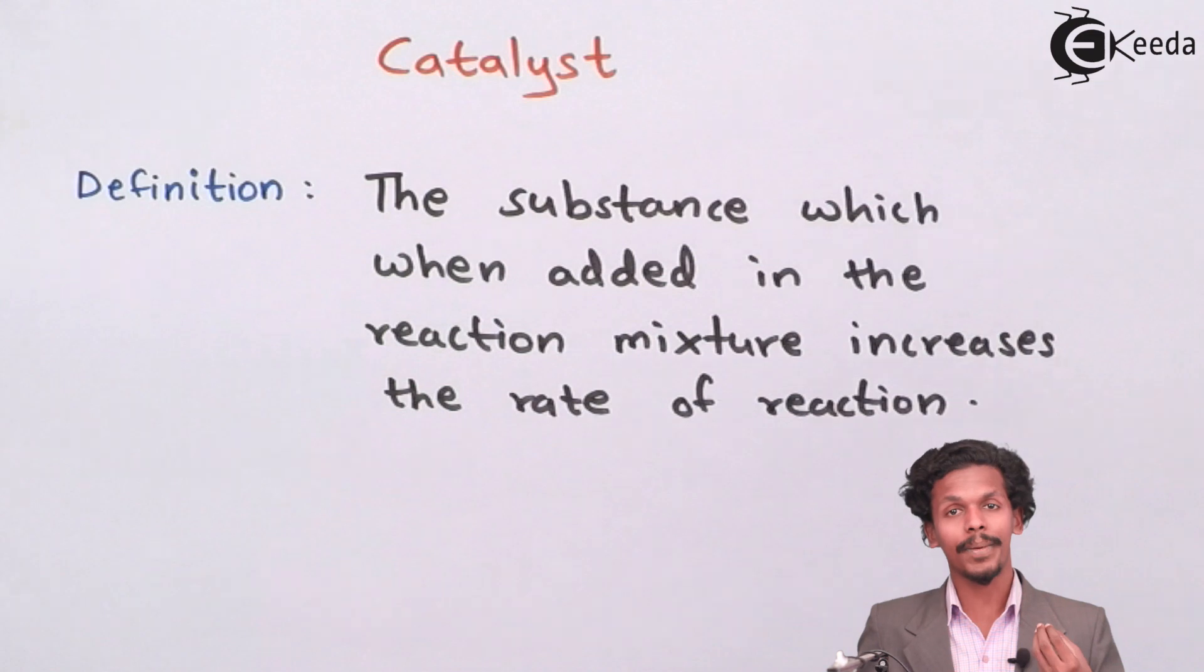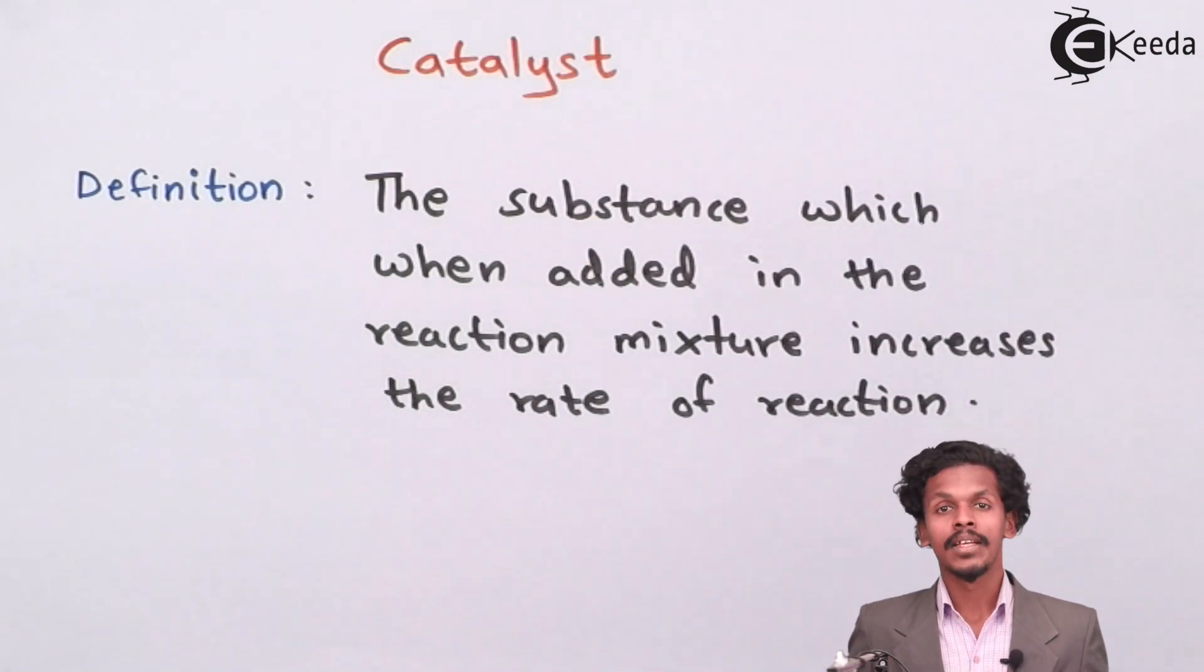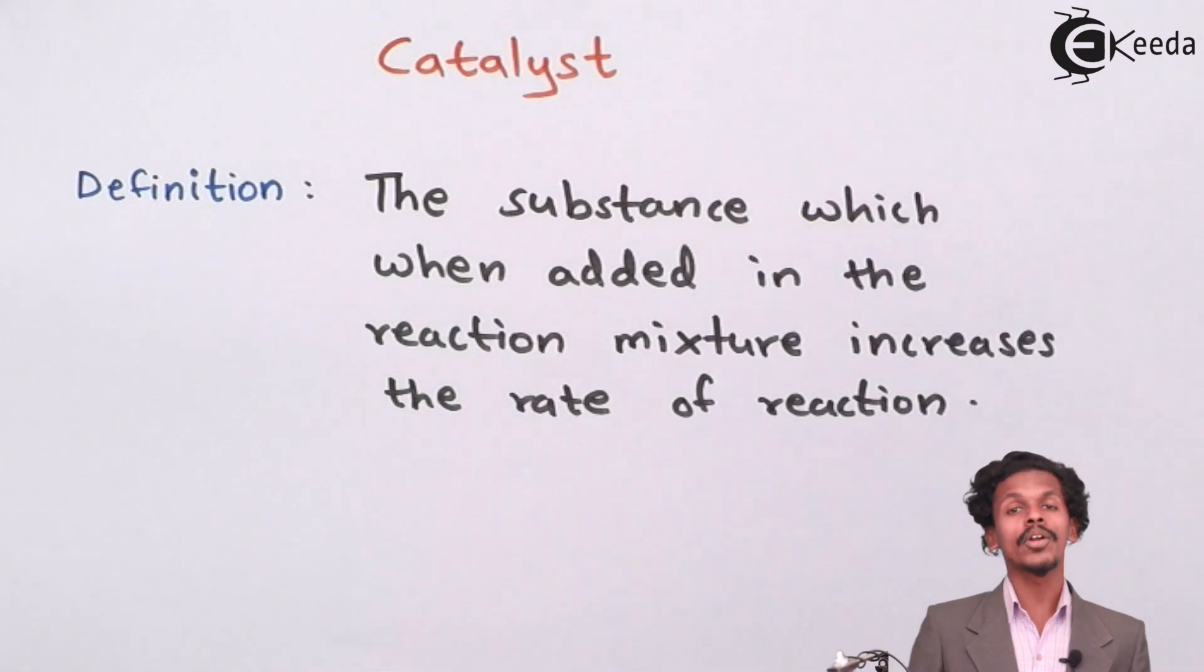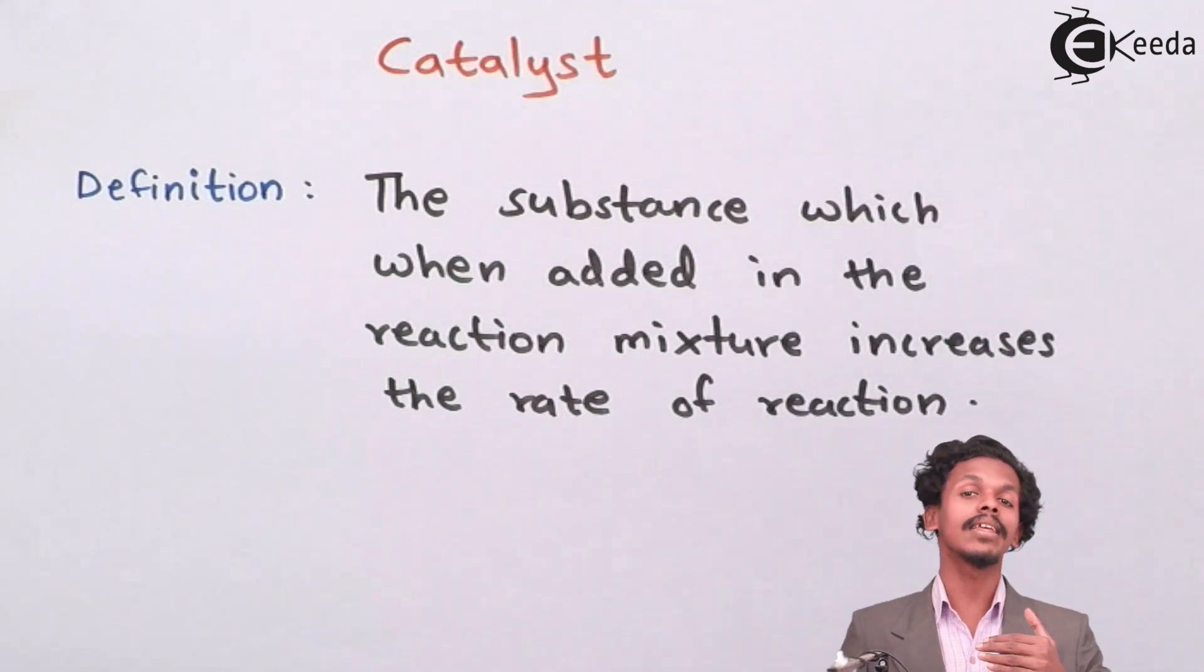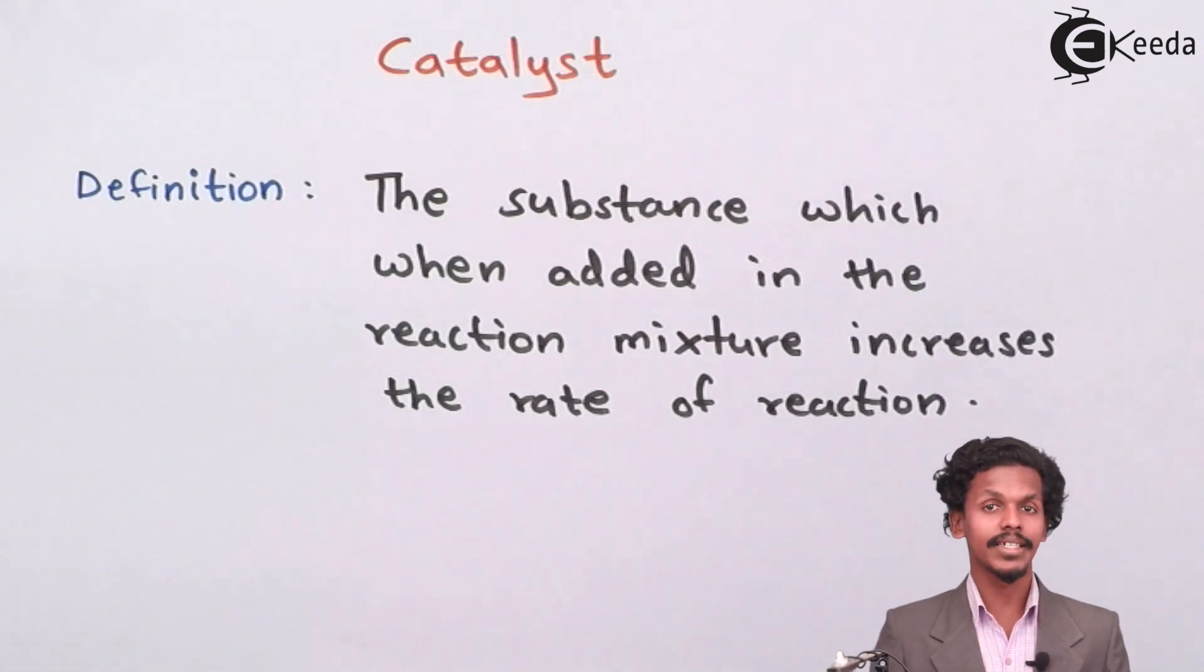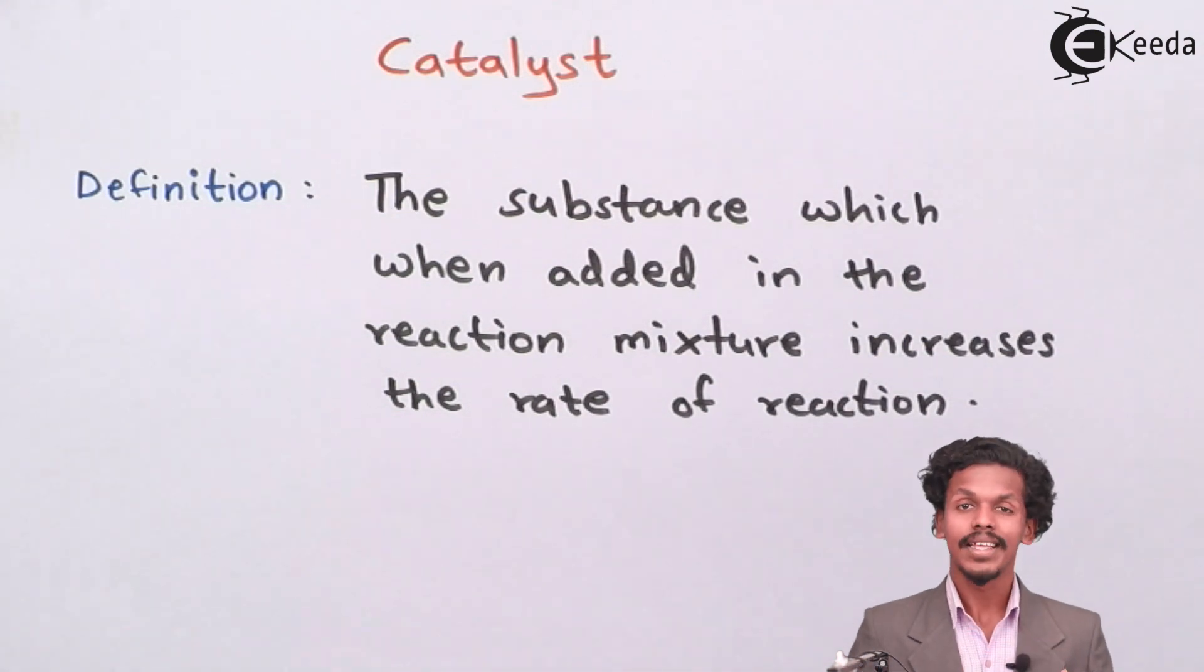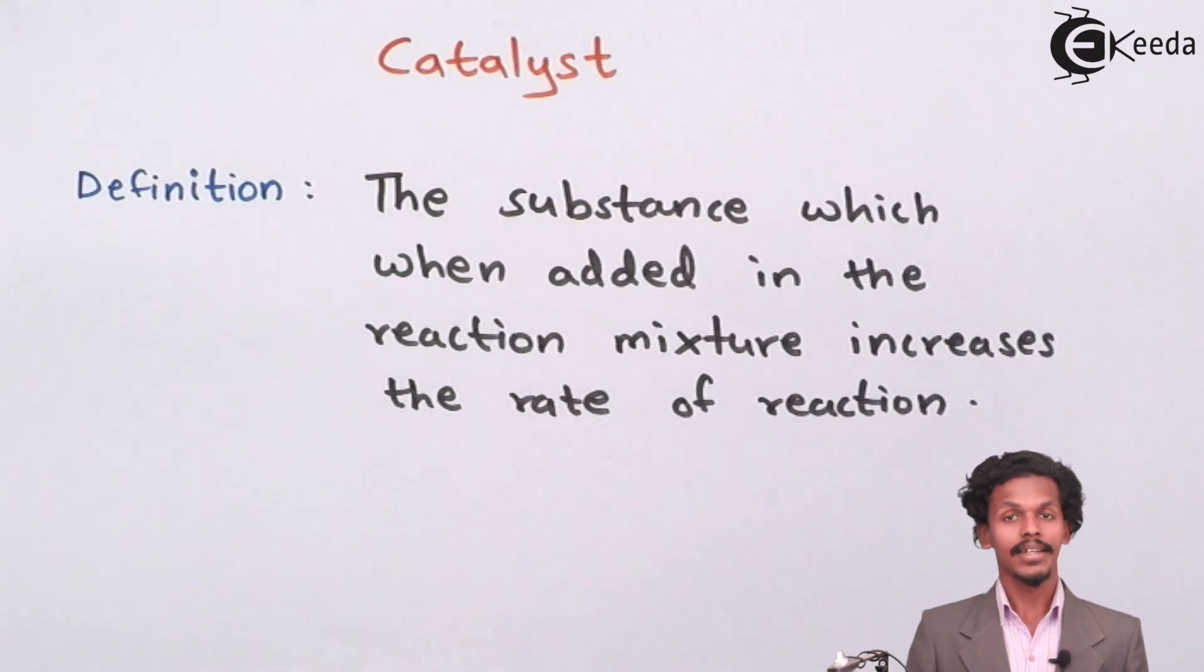The catalyst plays a very important role by reducing the activation energy. After the reduction of the activation energy, the reactants A and B can easily cross the potential barrier and we could obtain the product C and D.